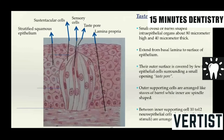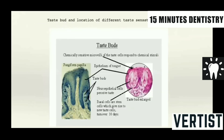Taste buds are small, ovoid or barrel-shaped intra-epithelial organs about 80 micrometers high and 50 micrometers wide. They extend from the basal lamina to the surface of the epithelium. They consist of a taste pore surrounded by outer supporting cells called sustentacular cells which are barrel-shaped, and inner spindle-shaped sensory or receptor cells — the neuroepithelial cells with a dark staining nucleus. Basal or stem cells give rise to new taste cells with a turnover rate of 10 days. They are chemically sensitive and respond to chemical stimuli giving us taste sensations.